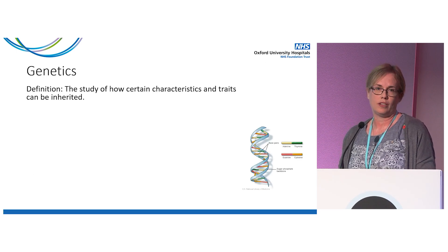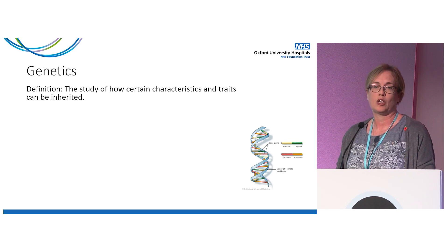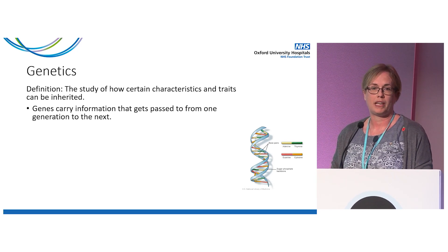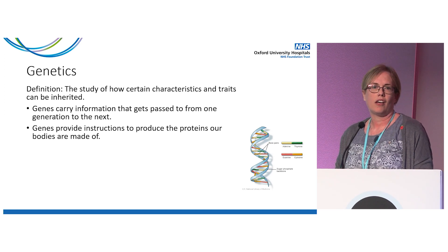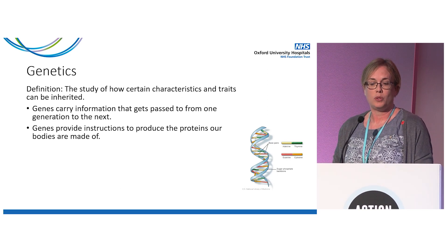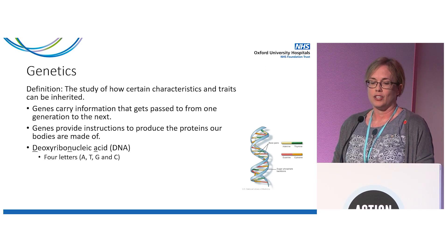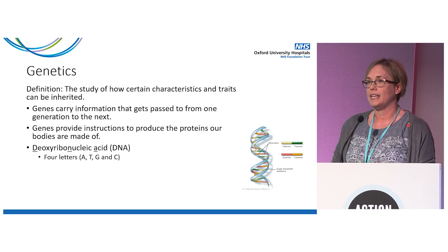Starting with a definition of genetics: the study of how certain characteristics or traits can be inherited. It's genes that pass on this information from one generation to the next. Genes are the instruction manuals that tell the body how to produce the proteins in the cells. Genes are made of the genetic material deoxyribonucleic acid — better known as DNA — and is comprised of four different bases represented by the letters A, T, G and C.